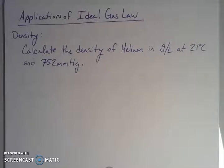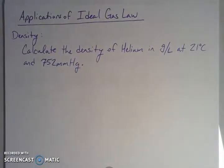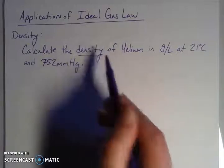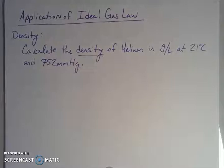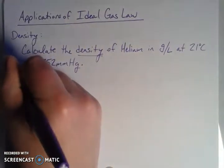Let's start with density. Remember that density is essentially a concentration — it's the number of grams of something per milliliter of the thing, so how much stuff and how much space. We're going to calculate the density of helium in units of grams per liter. We're at 21 degrees Celsius and 752 millimeters of mercury. We're looking for density in grams per liter, and since we're asking for grams per one liter, that gives us information about the volume.